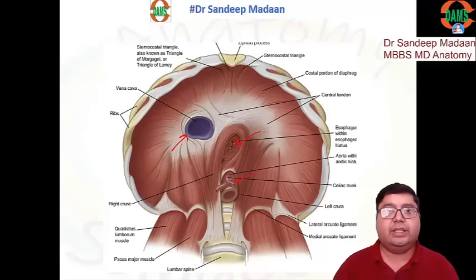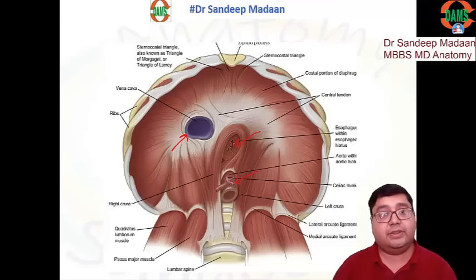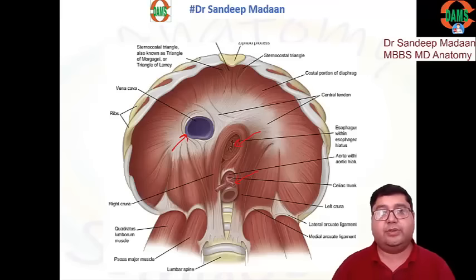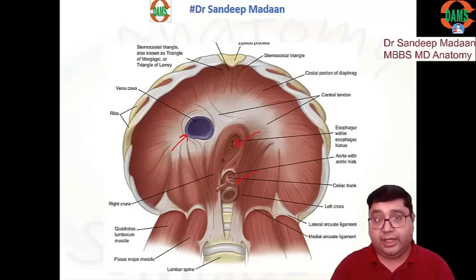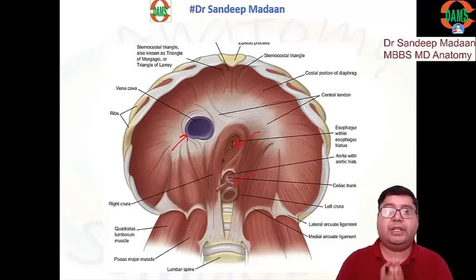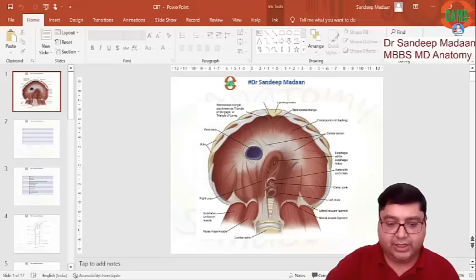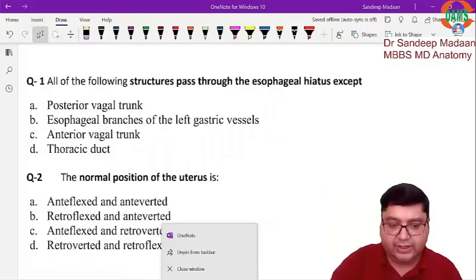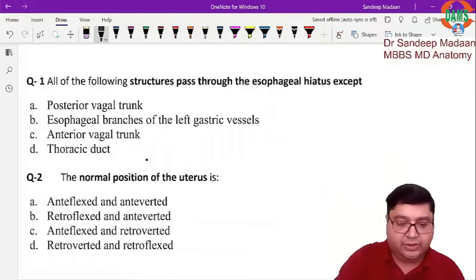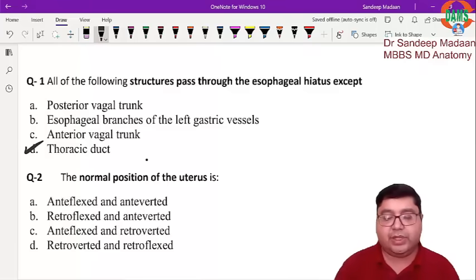For the esophageal opening, the esophagus and the vagus nerve pass, along with a branch of the left gastric artery. From the aortic opening, the aorta and the thoracic duct pass, along with the azygous vein. So the answer to this question is the thoracic duct, because the thoracic duct passes through the aortic opening, not through the esophageal hiatus.